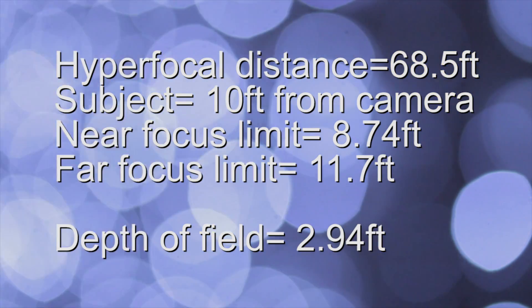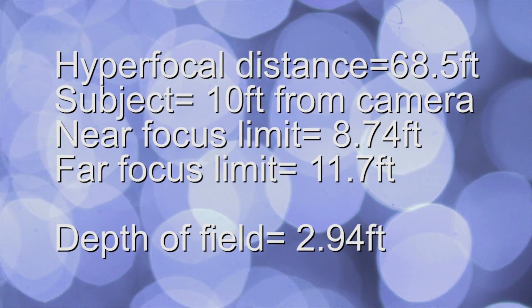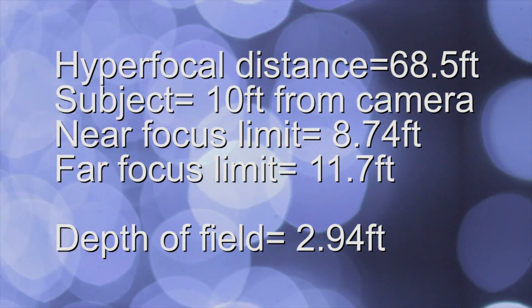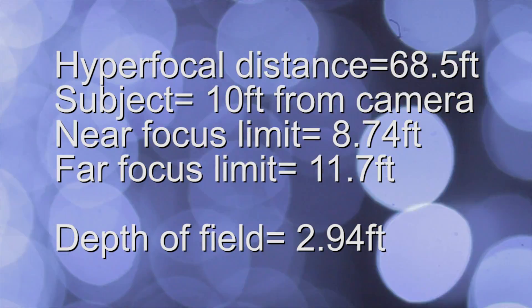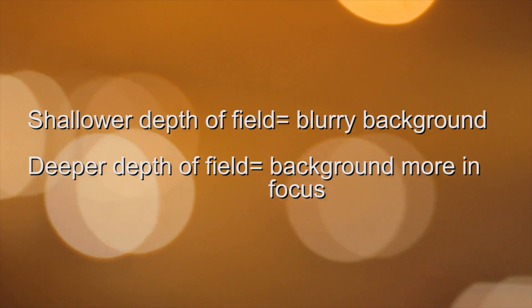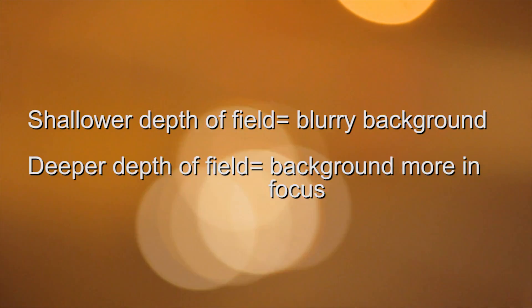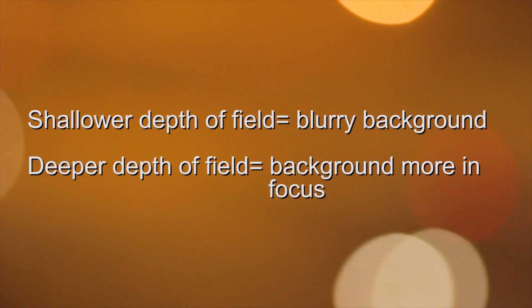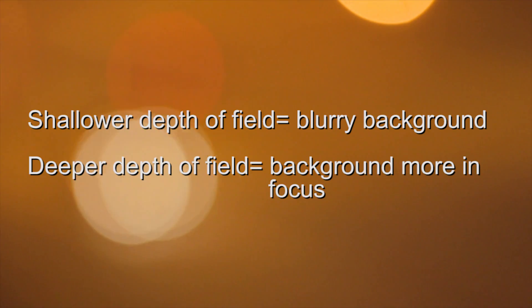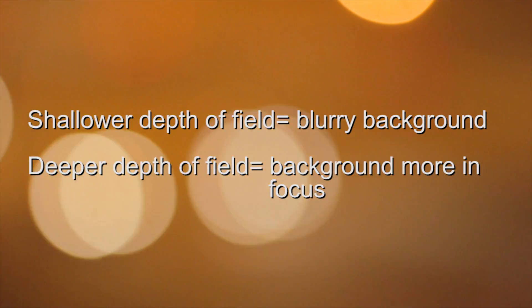If our subject were to move beyond the limits of that 3 foot depth of field, we would then have to change our focal distance to match it. The basics come down to this: having a shallower depth of field will allow more of the background image to be out of focus and blurry, drawing the eye toward your subject. And a deeper depth of field will mean that more of the background will be in focus and take some of the eye off of the subject.